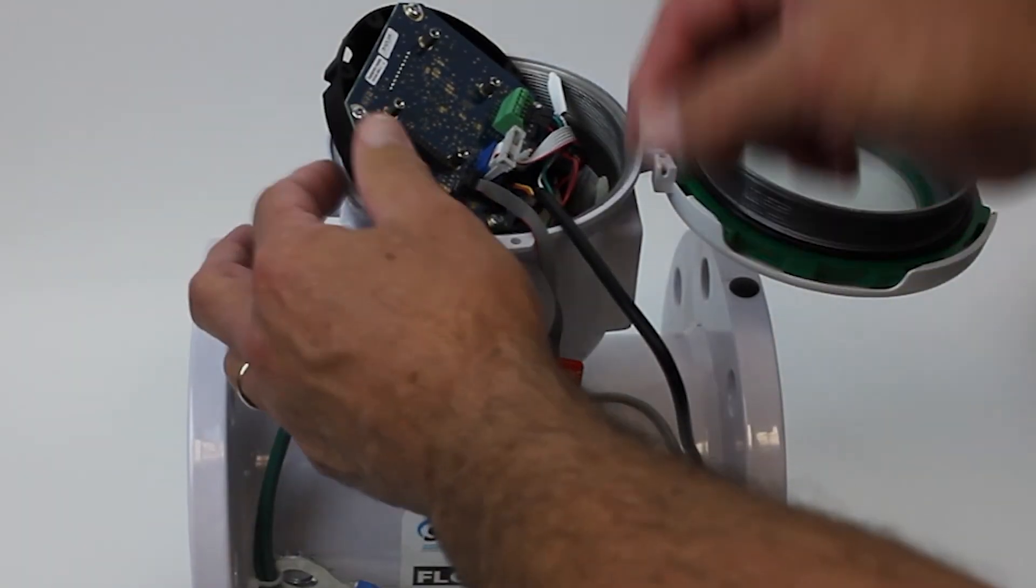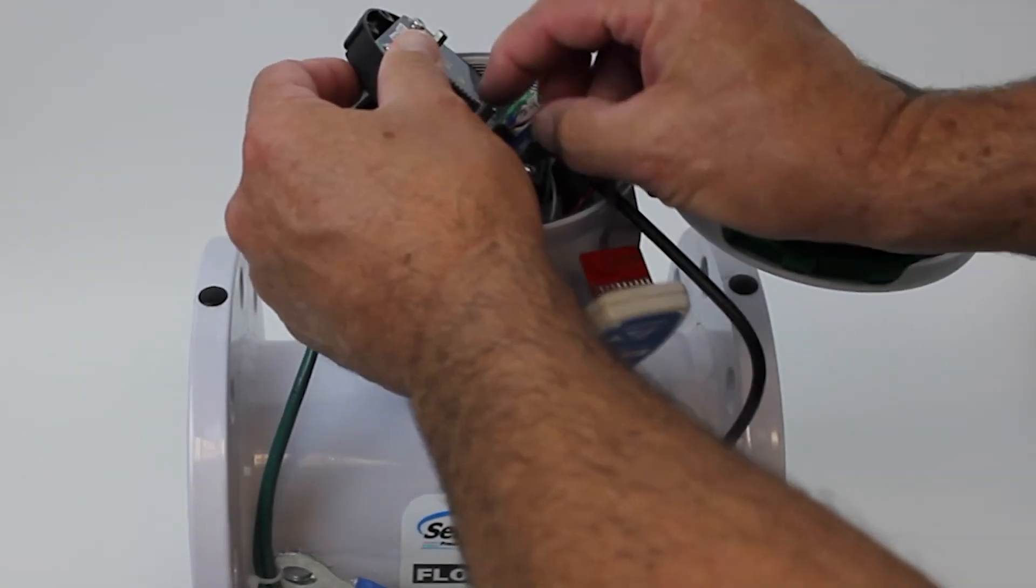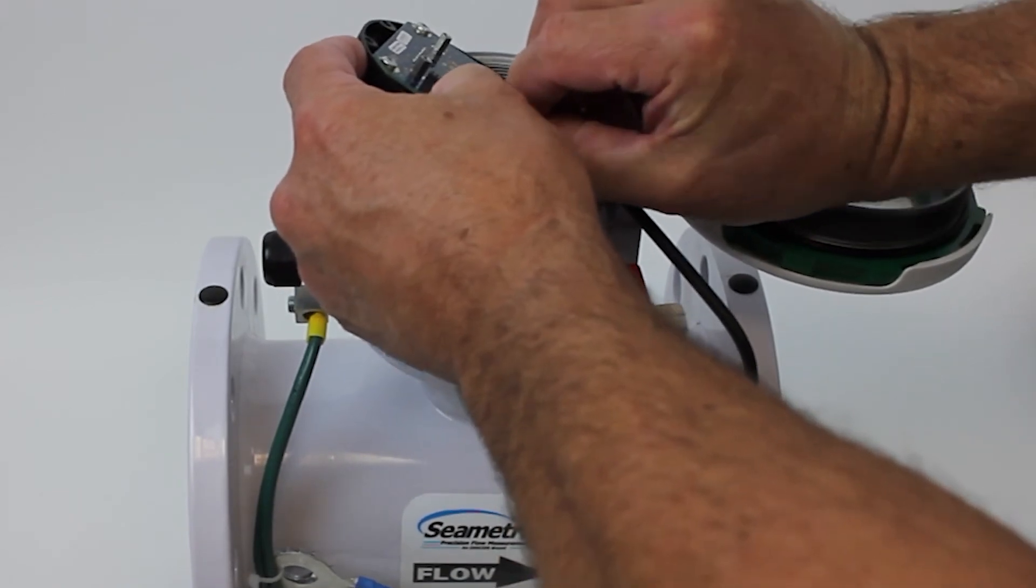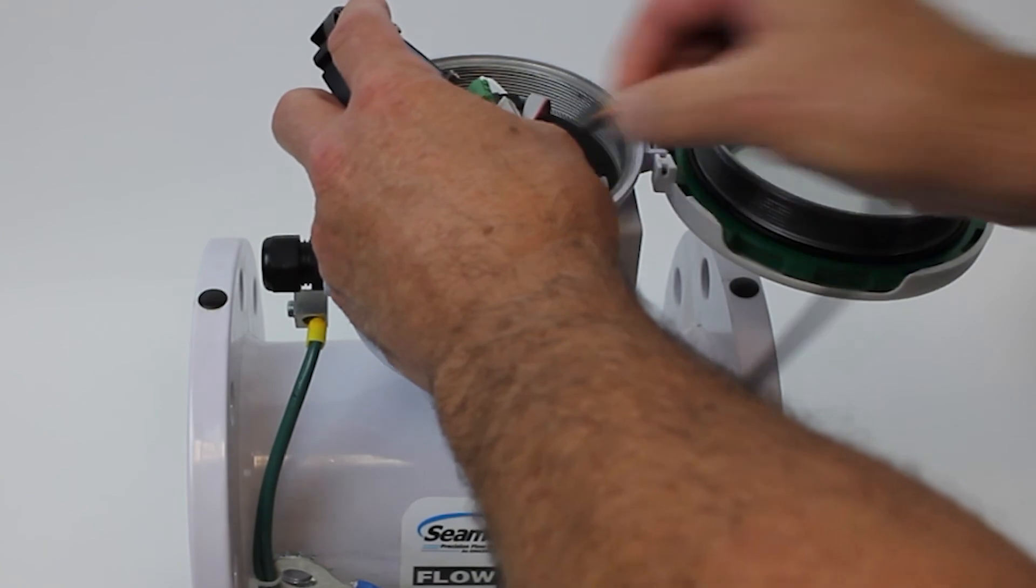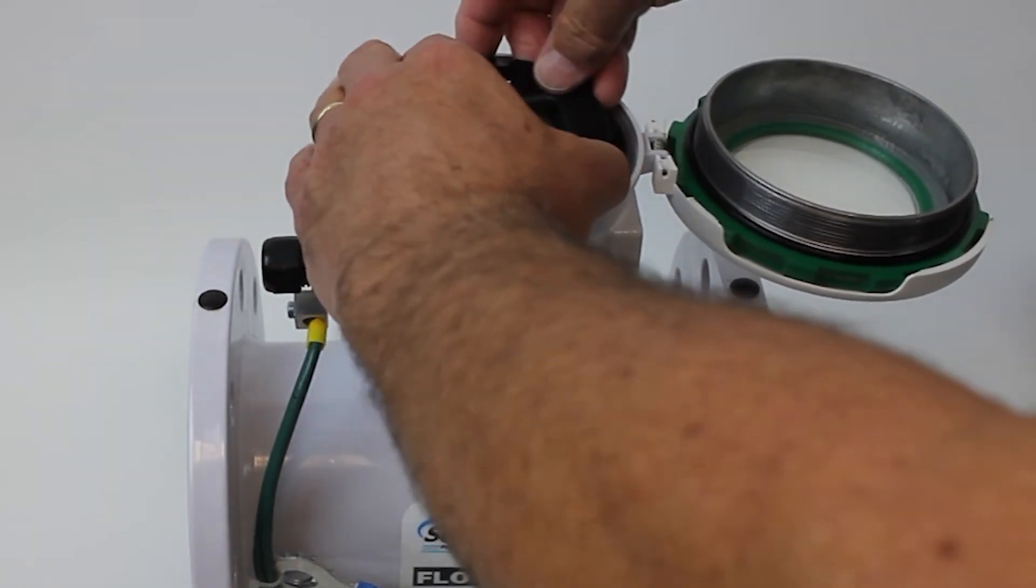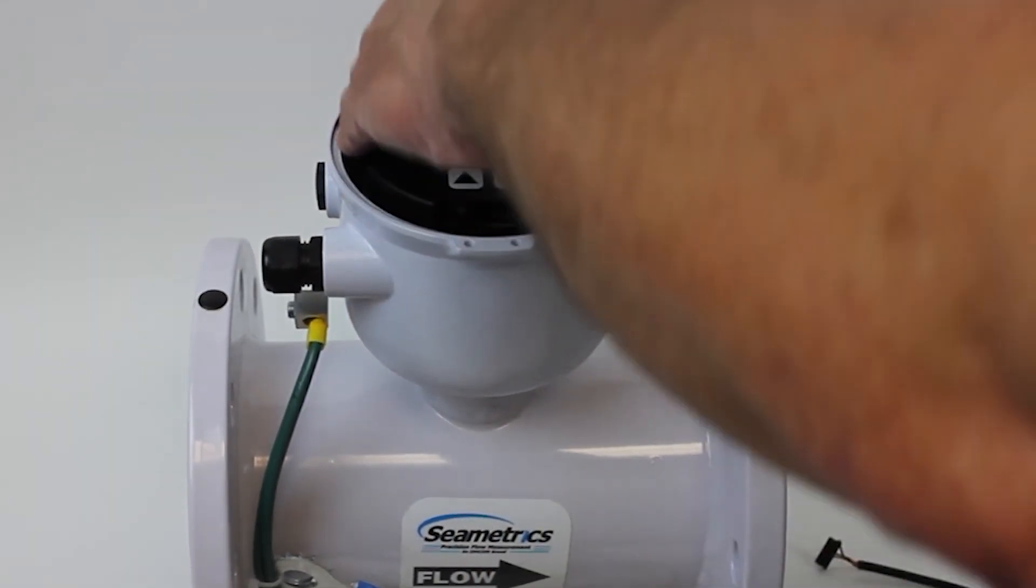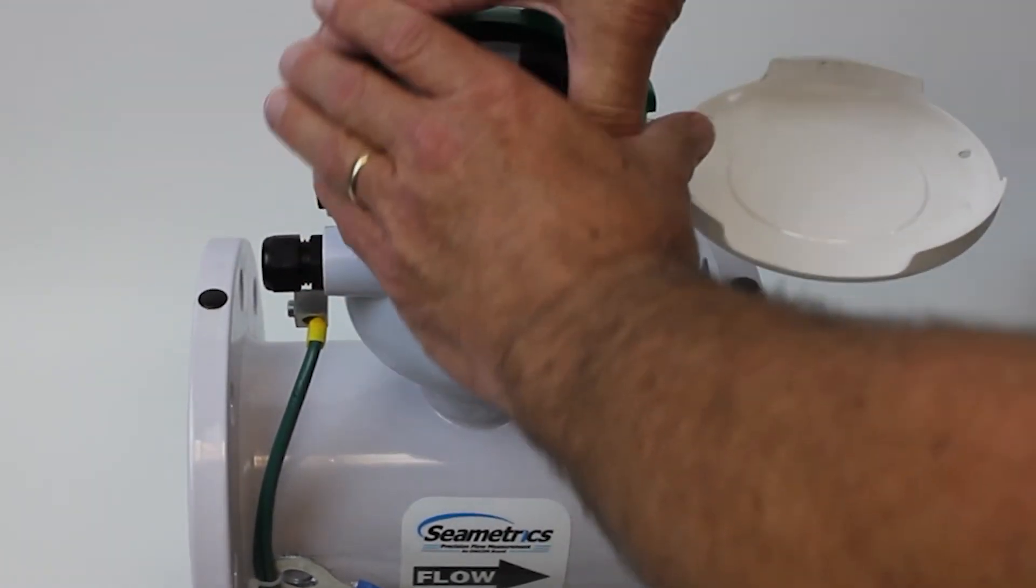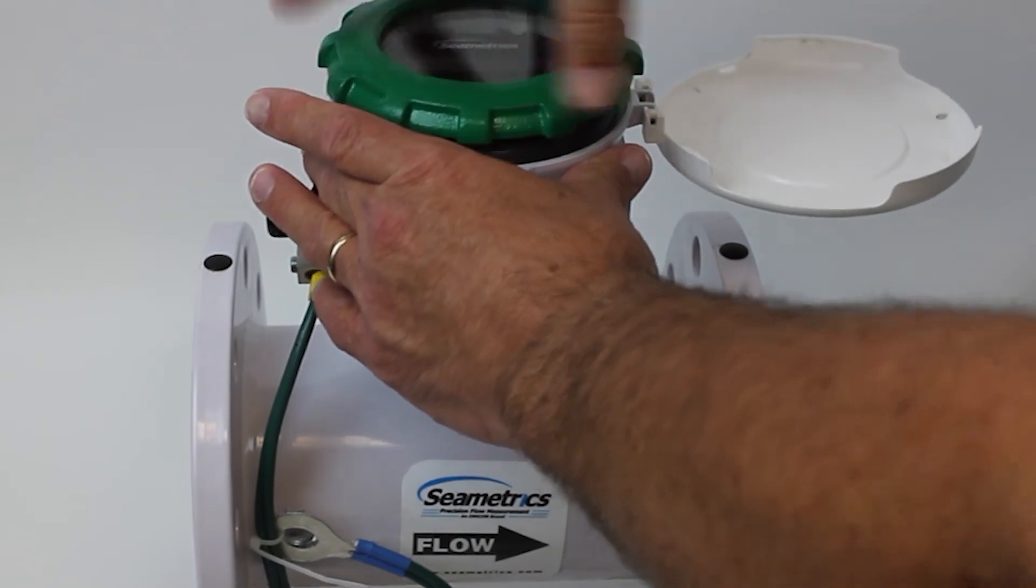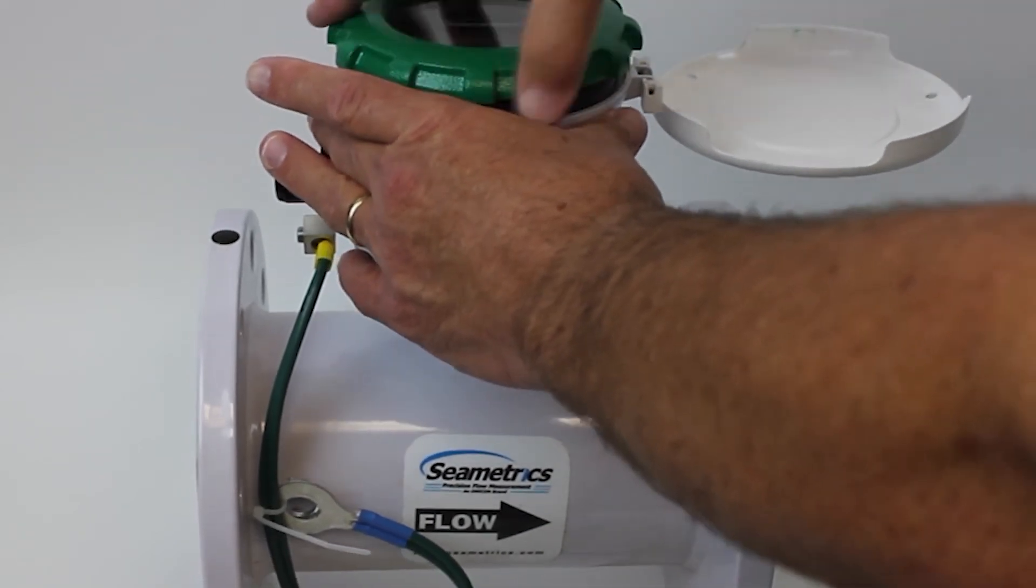So now that we're updated we're just going to come in here, disconnect the programmer, disconnect the serial cable, put the transmitter back on, put the lid back on, screw it down and we're done.